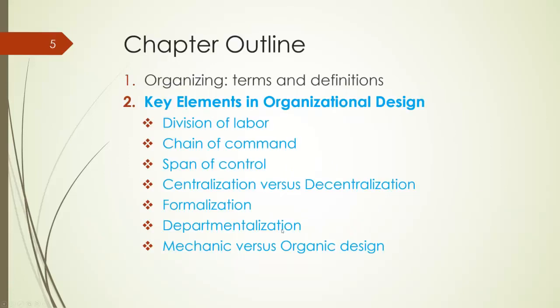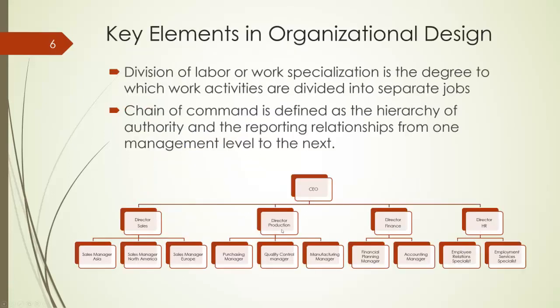In the second section, we discuss various key elements in organizational design such as the division of labor and the chain of command. The division of labor is the degree to which organizational tasks are subdivided into separate jobs. It is illustrated in the figure here by the separation of production into purchasing, quality control, and manufacturing. The chain of command is an unbroken line called the hierarchy of authority, which links all persons in an organization with the reporting relationships from one management level to the next. In other words, the chain of command shows who reports to whom.